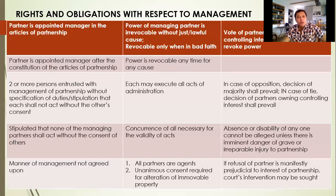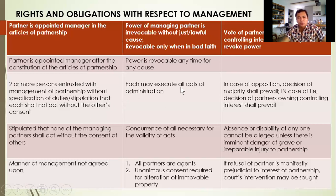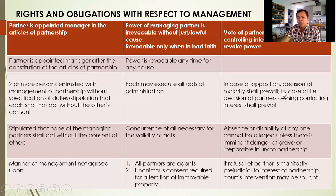Another scenario: when there are two or more partners interested in managing the partnership and there is no specification as to their duties or a stipulation that each shall not act without the other's consent, then each may execute all acts of administration — they can act on their own. But in case of opposition, if one opposes the other, the decision of the majority shall prevail. In case of a tie, the decision of partners owning controlling interest — meaning 51 percent — shall prevail.